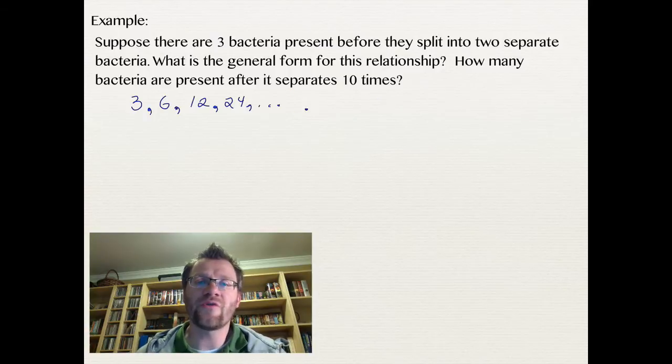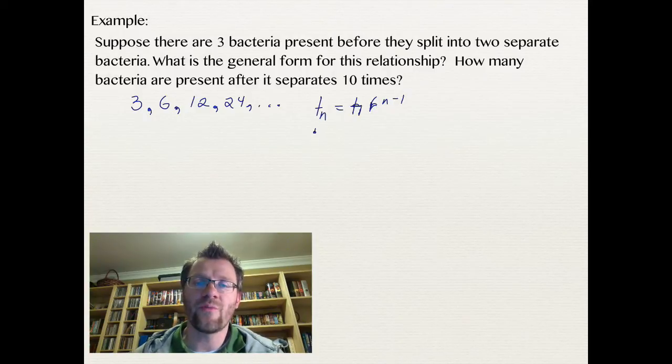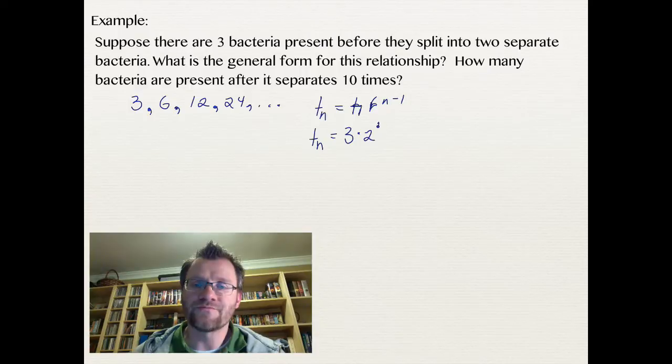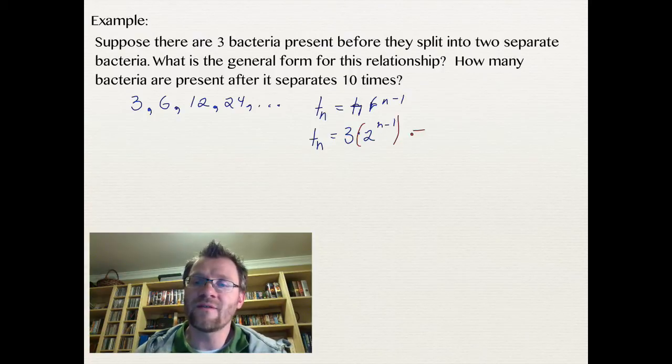So if we're going to write the general form, that means we need to know a few things. And that is, we need to know what T1 is, we need to know what R is, and we don't know what N is, and that's fine, because that's part of the general form. So TN is equal to our first term, which is 3, and our ratio, which is 2, and that's raised to the power of N minus 1. Now you have to be careful, because some of you might want to multiply 3 times 2 together. You cannot do that, because 2 has an exponent associated with it. So you can't say that this is 6 to the power of N minus 1. That is not equal. You cannot say that. Don't ever do that. You have to leave them separate.